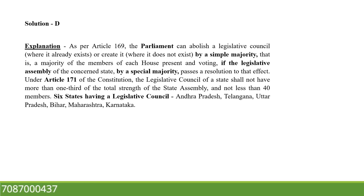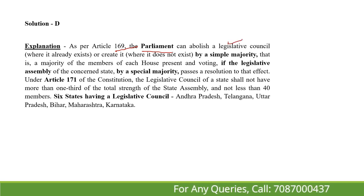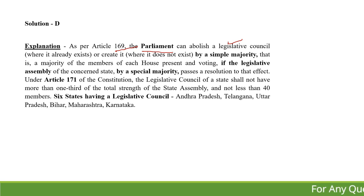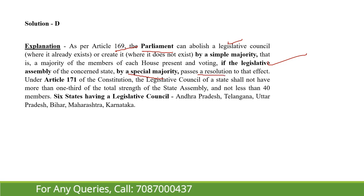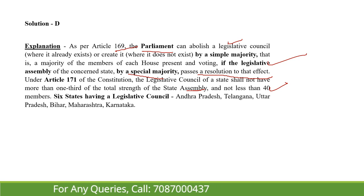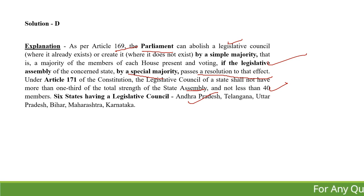Our Constitution under Article 169 gives Parliament the power to create or abolish a legislative council by a simple majority — that is, a simple majority of members present and voting. The strength of a state's legislative council should not exceed one-third of the state assembly's strength and should not be less than 40 members. This is in the news because Andhra Pradesh passed a resolution to abolish its legislative council. If it does, the remaining states with legislative councils will be Telangana, UP, Bihar, Maharashtra, and Karnataka.